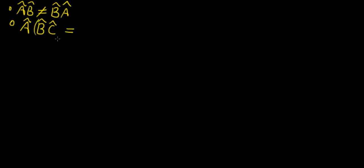The next property is associativity. If we have three operators multiplying each other, we can group them into pairs, and it shouldn't matter in which way we group them — we should get the same result. So despite not commuting, operators do follow the associativity property. We can group them into different pairs and it will give the same result.